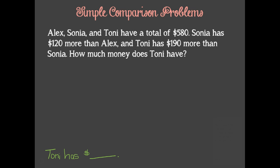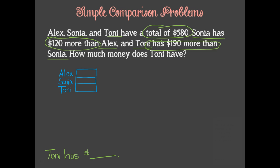When rereading the problem, we identify the important information we need to solve the problem. Since this is a comparison problem, we can start each of the three friends out with equal size unit bars, and then adjust them according to the information given. Since we are told that Sonia has $120 more than Alex, we can add another unit onto her bar and label it $120.